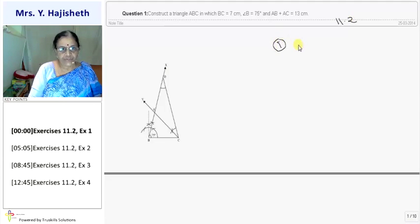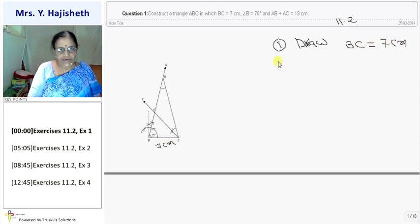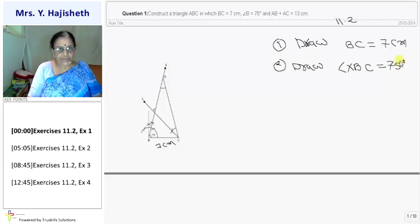Construct a triangle ABC in which BC is 7 cm, angle B is 75 degrees, and AB plus AC is 13 cm. First step is, draw BC equal to 7 cm. Here I have drawn BC is 7 cm. Then second point, I draw angle XBC equal to 75 degrees.